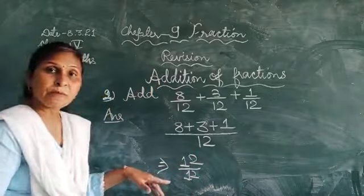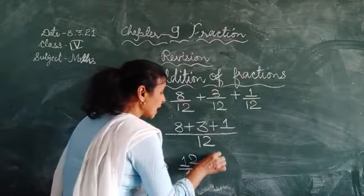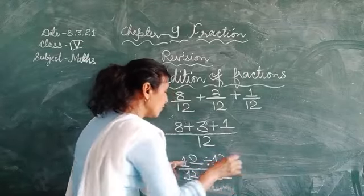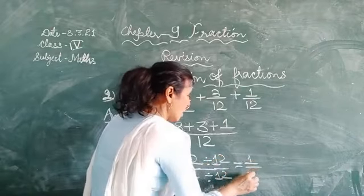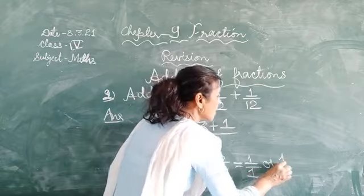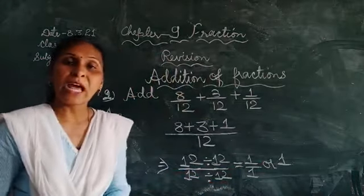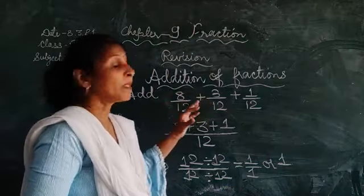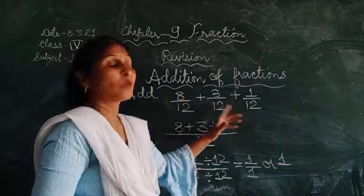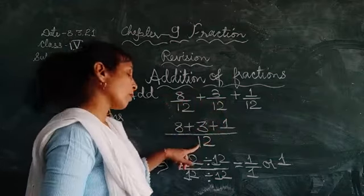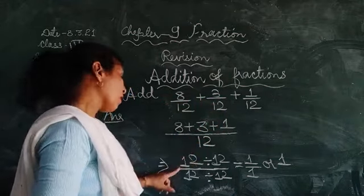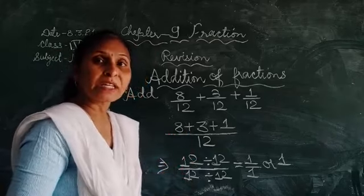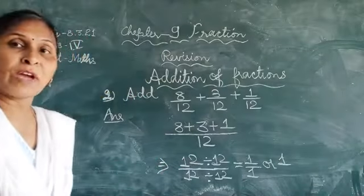Ab hum iska lowest term find out karenge. Agar hum dono side yahan ko 12 se divide karke, to mera lowest term mein aa jayega answer that is 1 upon 1, or we can say 1. So our answer is 1. To is tarah se like fraction ka hum addition karte hain. Chahe kitne bhi given ho, hum saare numerators ko add kar dete hain aur common denominator likh dete hain.